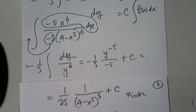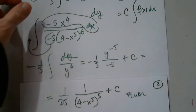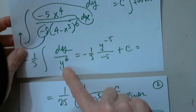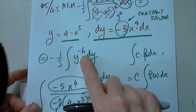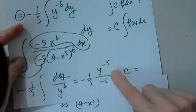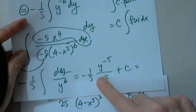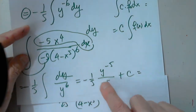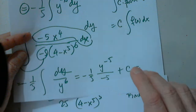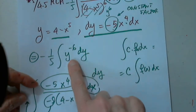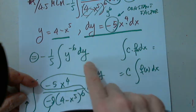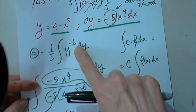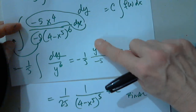Student asks: the anti-derivative of dy over y to the sixth — does that give you y to negative five? Yes. Because we increase the power by one and divide by exactly the same number. That works for any power. If it's below dy, I bring it as y to negative six. It's y to negative six, so I increase the power by one and divide by what I got.